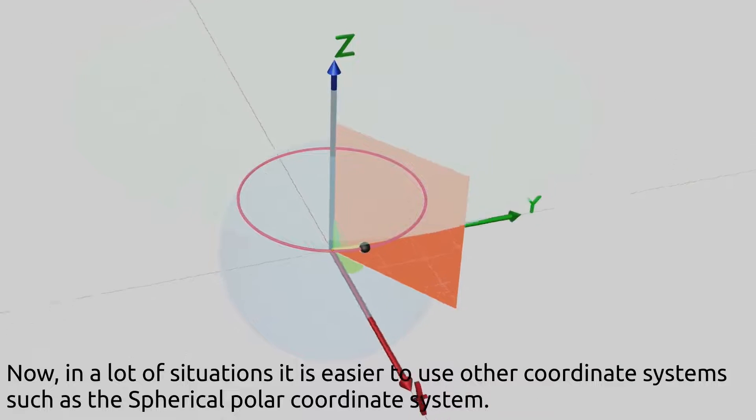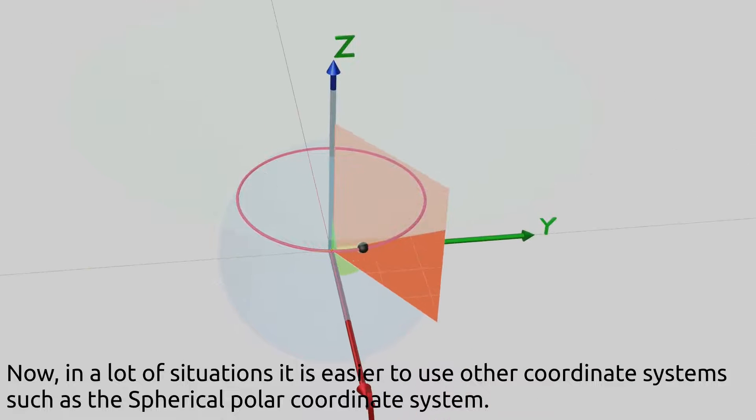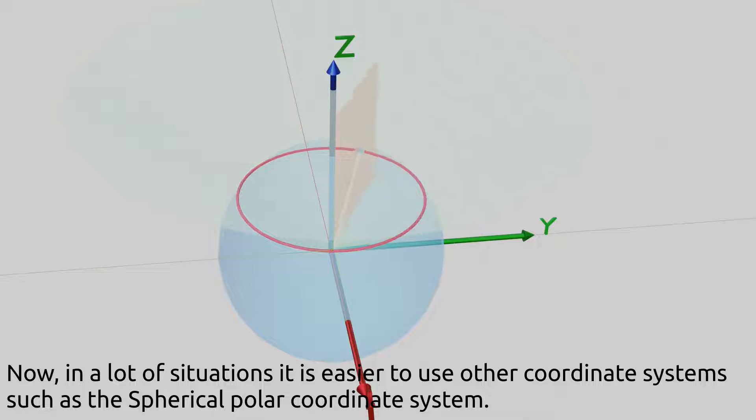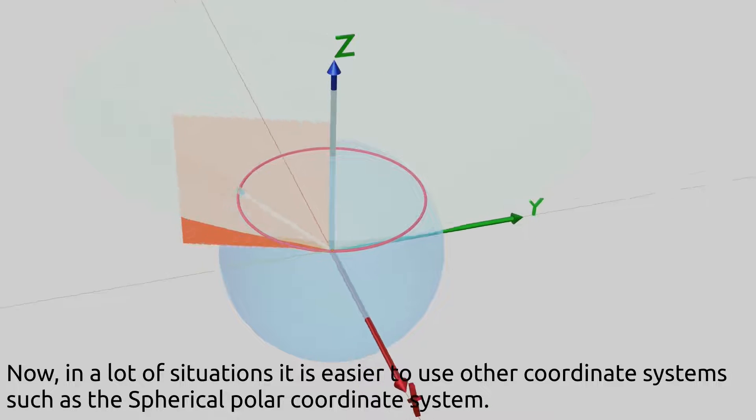Now, in a lot of situations, it is easier to use other coordinate systems, such as the spherical polar coordinate system.